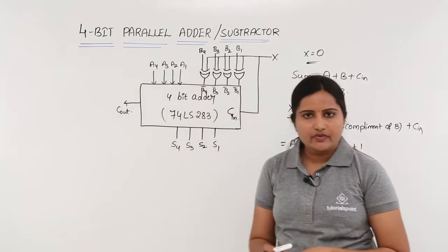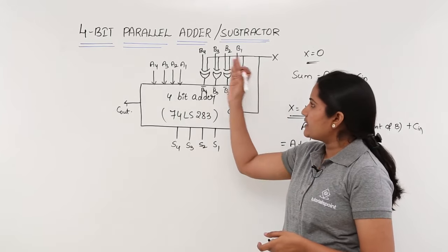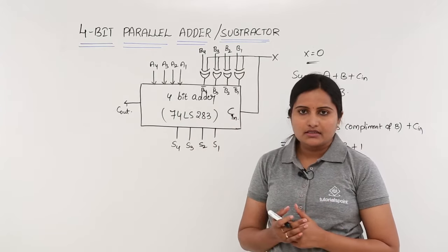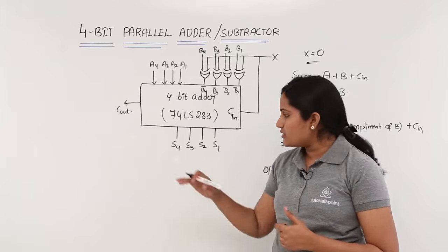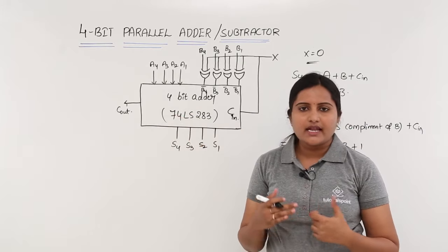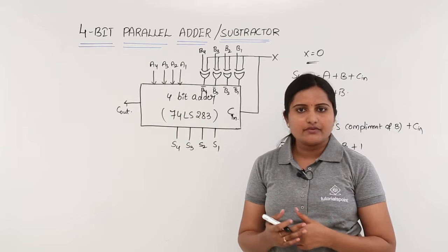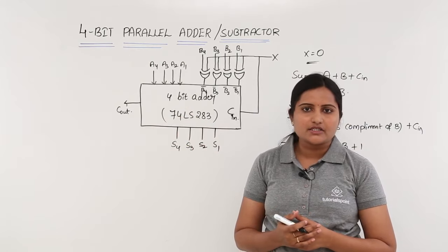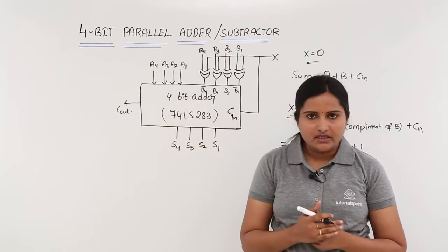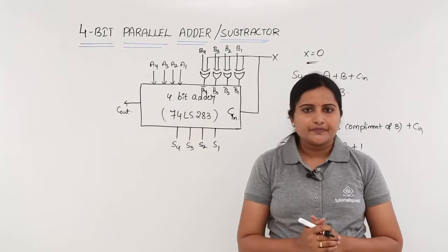The IC number is very important for the adder-subtractor circuit and may be asked in exams. The IC used for 4-bit addition and subtraction is 74LS283.